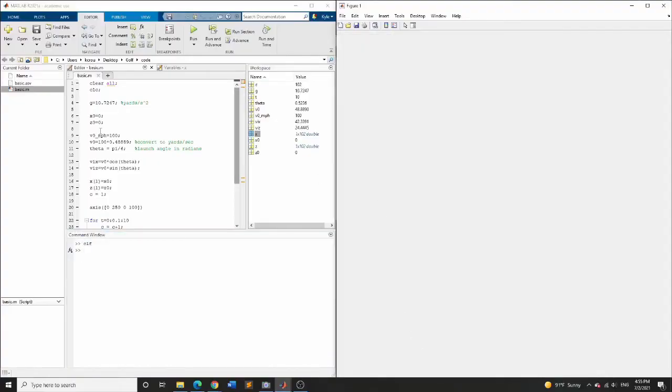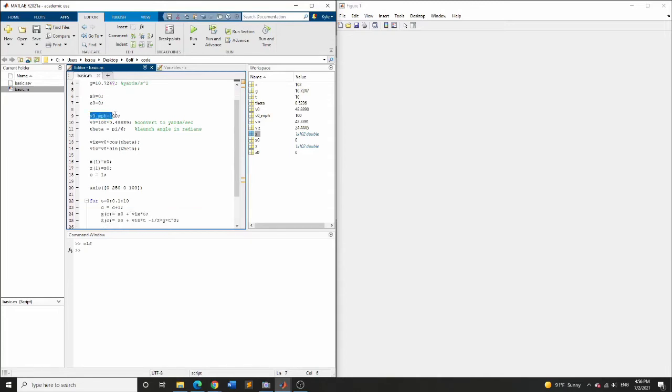Okay, so welcome into MATLAB here. The first thing I did in my little script I wrote was to define g as 10.72, and that's it in units of yards per second squared, so we're going to be measuring distance in yards. I defined the x and z positions initially to be zero, and I said we had a launch angle, or a launch speed rather, of about 100 miles per hour. And you can convert that into yards per second by multiplying by this factor. So it's about a half to convert.